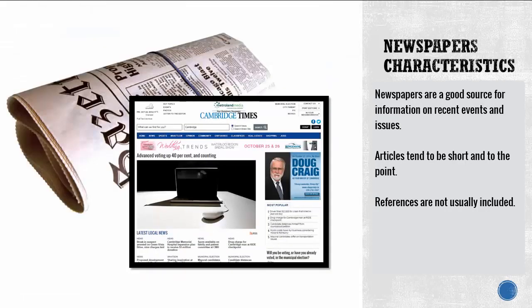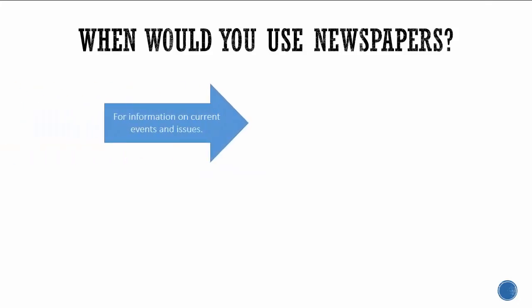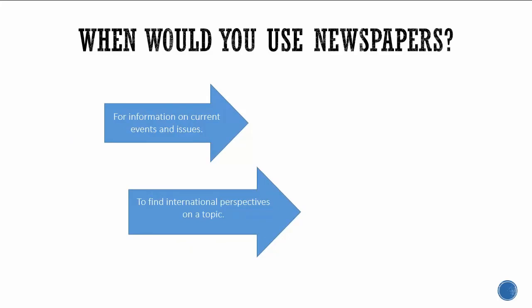What about the characteristics of newspapers? Newspapers are a good source of information on recent events and issues. Articles tend to be short and to the point, and references are not usually included. Typically, you'd use them to find information on current events and issues, international perspectives on a topic, or local information.